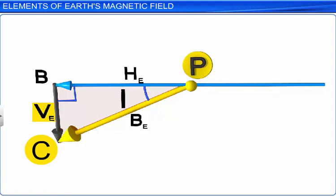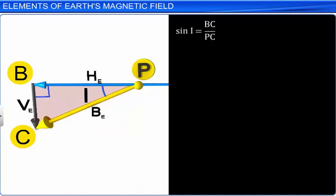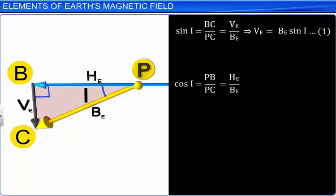We can now write the trigonometric relationships for the sides and the angle in the right-angled triangle PBC. sin I = BC/PC = VE/BE, so VE = BE·sin I. cos I = PB/PC = HE/BE, so HE = BE·cos I. tan I = BC/PB = VE/HE, so VE = HE·tan I.